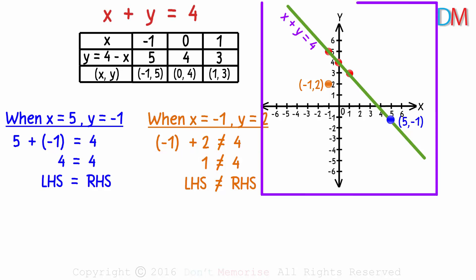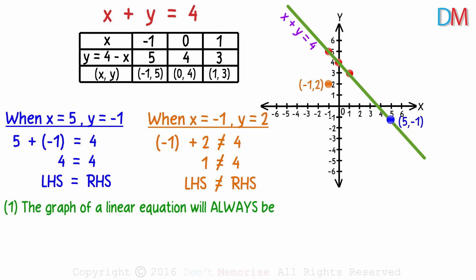Now you know how to plot the graph of a linear equation in two variables. And apart from that, there are three main takeaways from this video. First, the graph of a linear equation will always be a straight line.